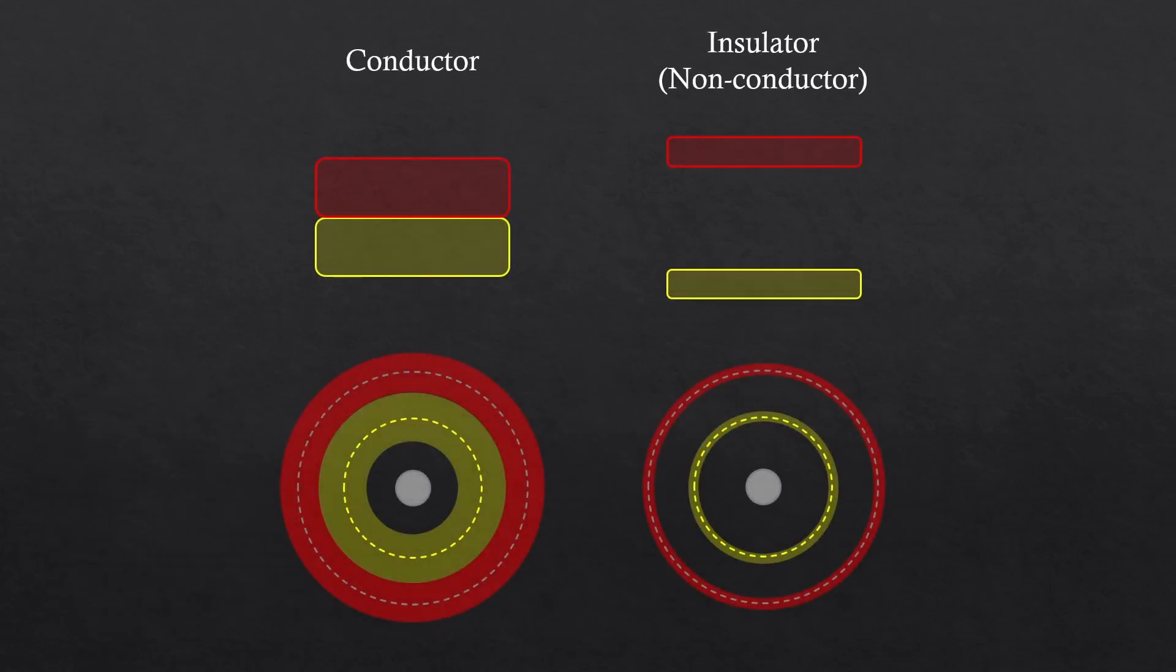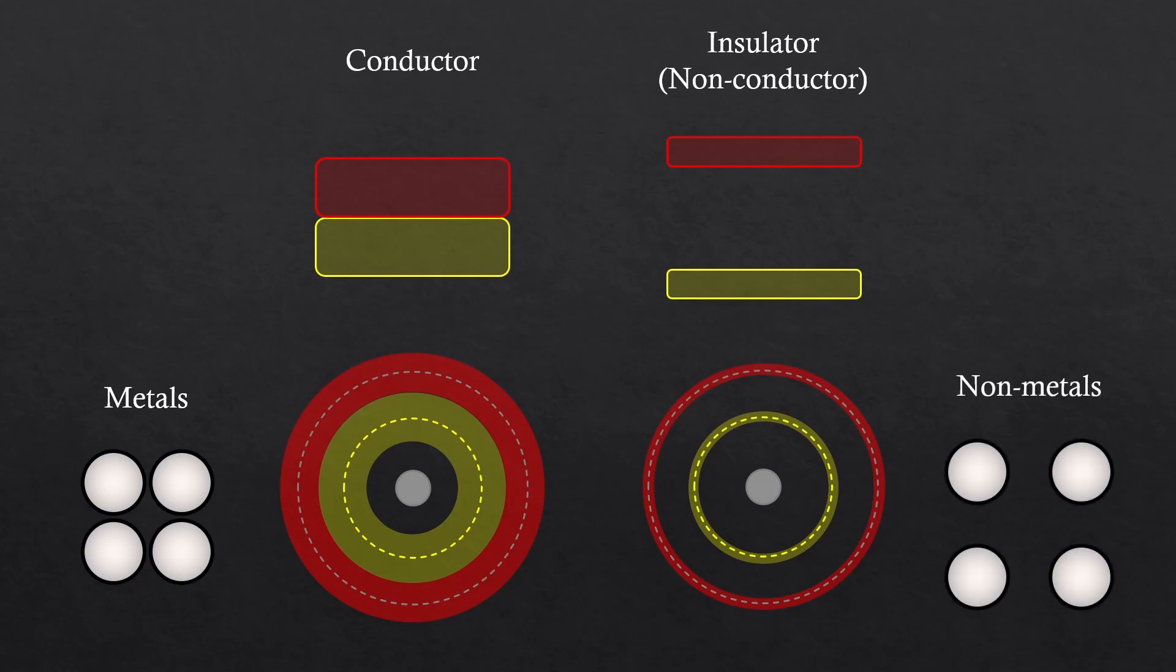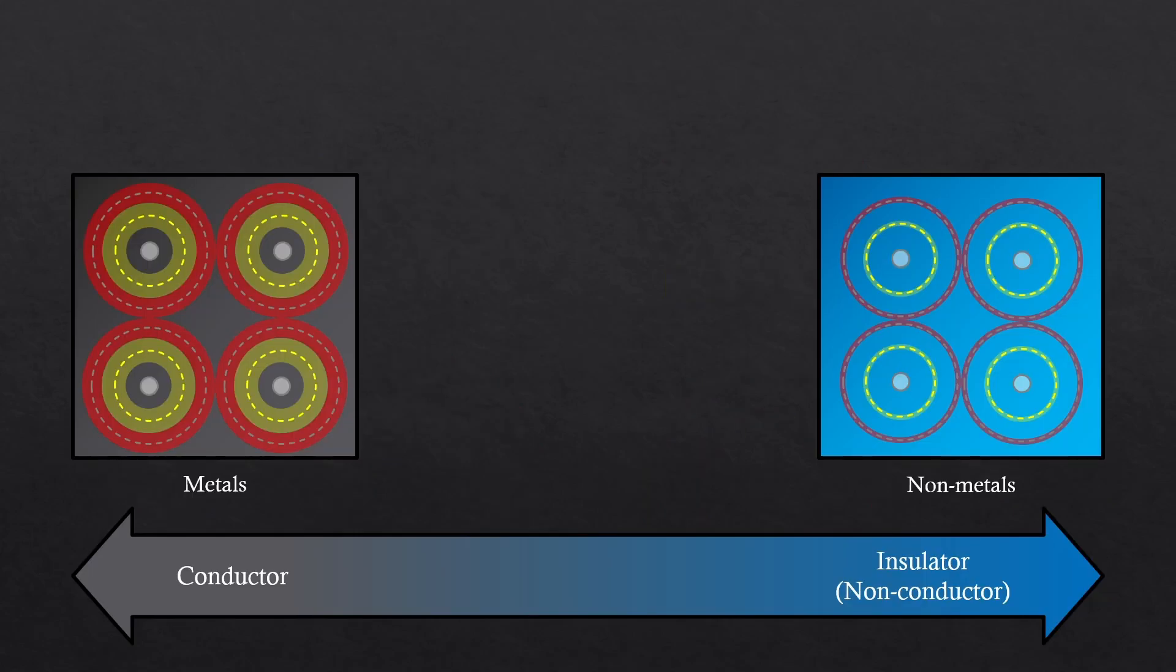So yes, metals have zero energy gap, because they're bonded very close to each other. On the other hand, non-metals are usually not bonded close enough to eliminate the energy gap. So this is why metals are good conductors, because they have zero energy gap, or band gap. And non-metals are insulators, because of the gap between the valence and the conduction bands.